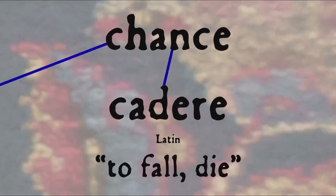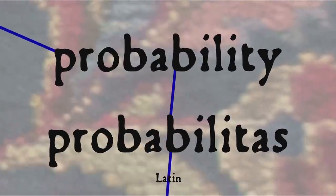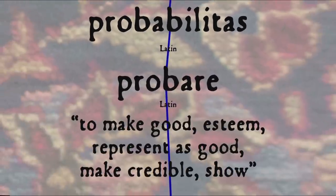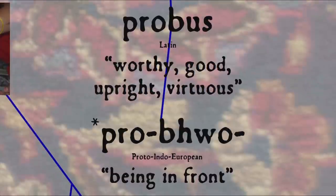The word 'chance,' on the other hand, comes through French from Latin 'cado,' meaning 'to fall or die,' and when it entered English around 1300 it had the sense of 'something that takes place, an occurrence' — in other words, how matters fall — reminding us of how the dice fall, and thus became a synonym for probability. The word 'probability' itself comes from Latin 'probabilitas,' cognate with the word 'prove,' from the Latin verb 'probare,' meaning 'to make good or show,' from 'probus,' meaning 'worthy or good,' from Proto-Indo-European 'probo,' meaning 'being in front.'